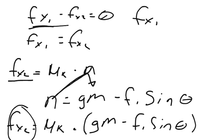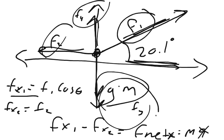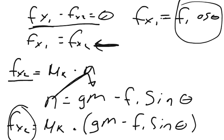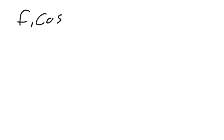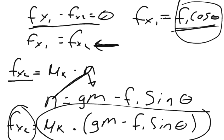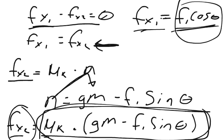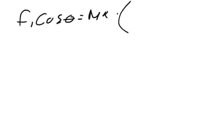F of x1 is the x-component of F1, so F of x1 equals F1 cosine theta. Since F of x1 equals F of x2, we can set them equal: F1 cosine theta equals the coefficient of kinetic friction times the quantity (g times m minus F1 sine theta).